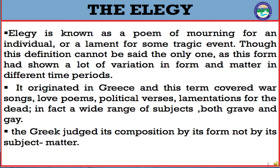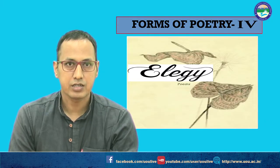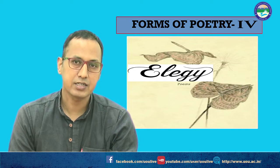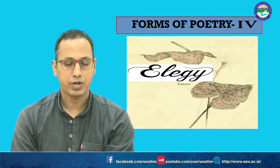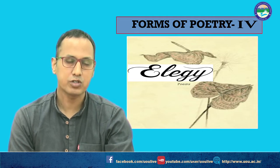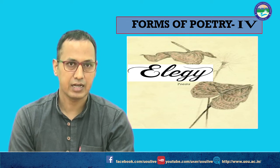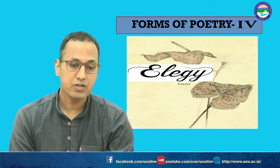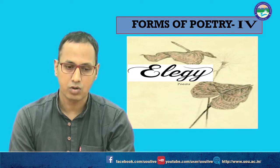The Greeks actually judged the composition not by subject matter but by its form. The form called elegy at that time was written in elegiac measure couplet, composed of a dactylic hexameter followed by a dactylic pentameter. Any form written in this meter — dactylic hexameter followed by dactylic pentameter — was classed as an elegy, irrespective of its theme and subject matter.